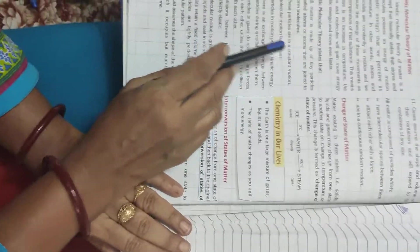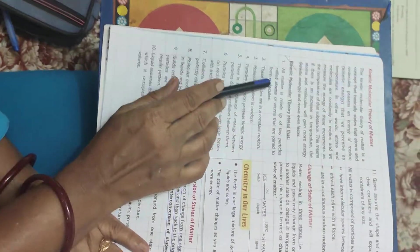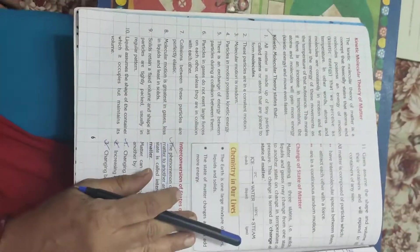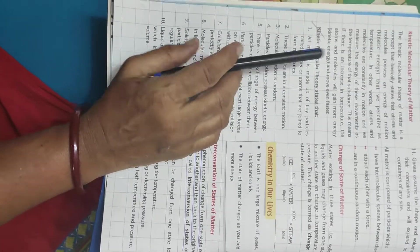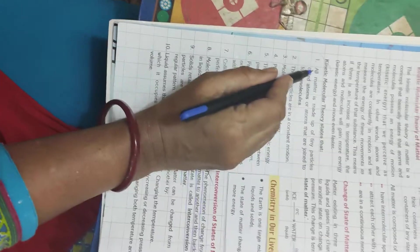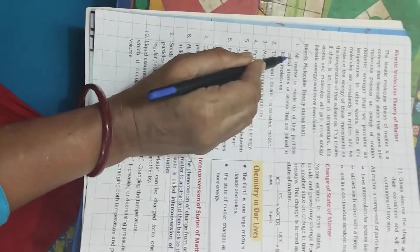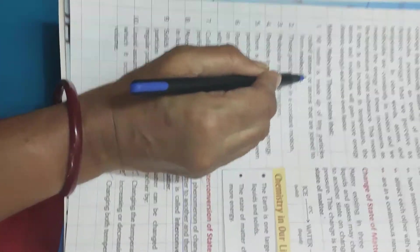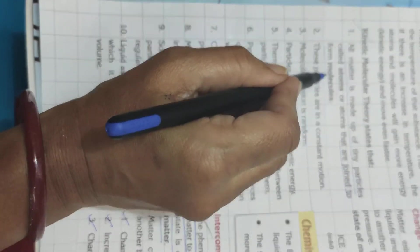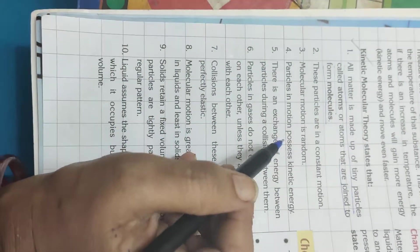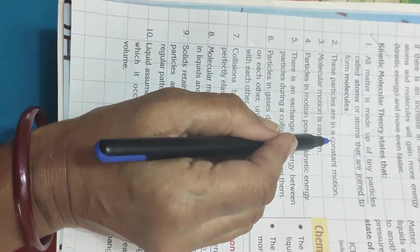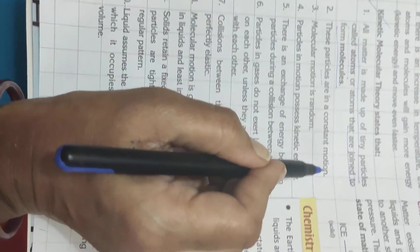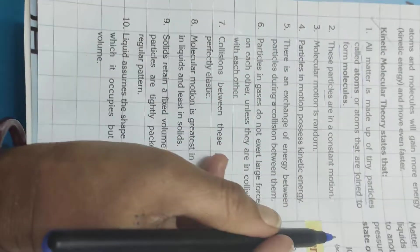Now, let us study postulates of kinetic theory. Please take your pencil and keep on underlining what I say. All matter is made up of tiny particles called atoms that are joined to form molecules. These particles, second point, these particles are in constant motion. Just now I told you, that is they possess kinetic energy. Molecular motion is random.